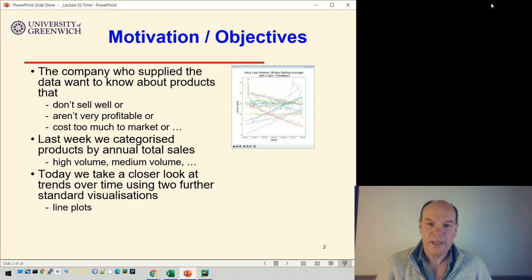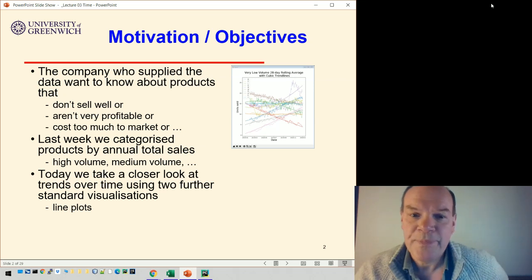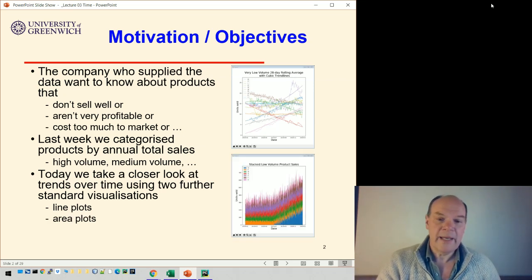One is line plots. So we're mapping the data over time. On the bottom axis you get time. On the left-hand axis you get the units sold. And area plots, stacked area plots. We'll use them a little bit at the end. They're quite useful but we'll mostly focus on line plots.